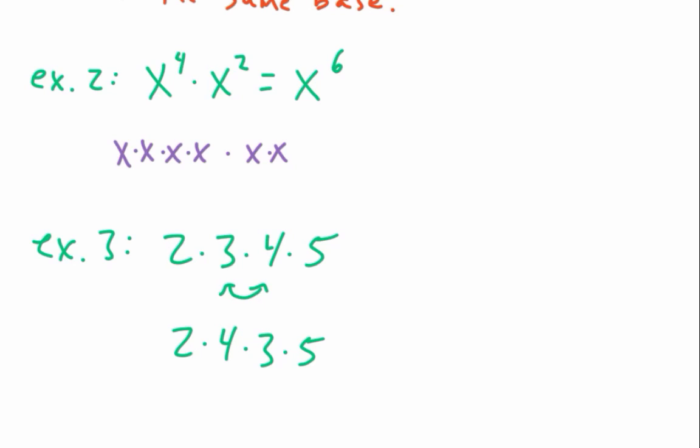If it's all multiplication, you can change the order, right? So this is going to be the same answer as if I do 2 times 4 times 3 times 5. Anyone remember the name of that property? Not distributive. Commutative. Nice. It's kind of like communication is how I remembered it. It's kind of like A then B, or B then A. It's kind of like talking back and forth.